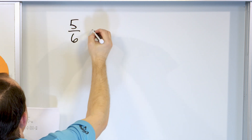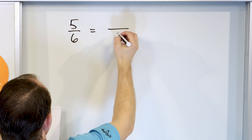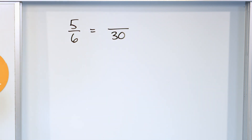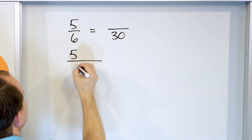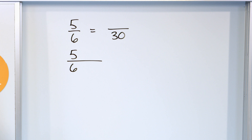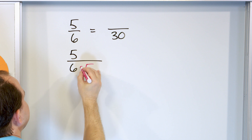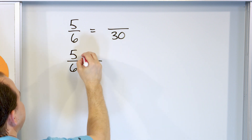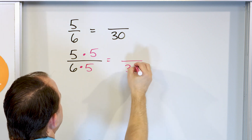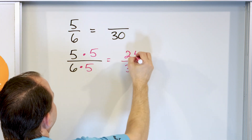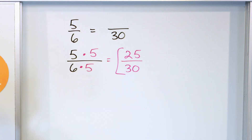Let's take a look at 5/6, and we're going to say the equivalent fraction has a 30 in the denominator. We have the fraction 5/6 and we can multiply that fraction by anything we want. What are we going to choose? We want 30, so we're going to multiply by 5 here because 6 times 5 is 30. And to keep everything balanced, we multiply by 5 on the top as well. So 6 times 5 is 30, and 5 times 5 is 25. So 25/30 is exactly the same as 5/6.